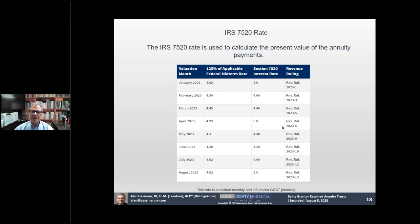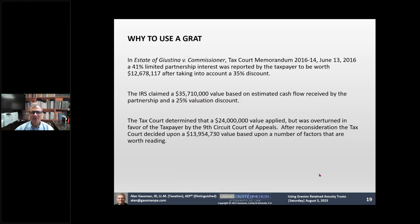This rate is edging up. In January it was 4.6, went up to 5 in April, and now in August it's back up to 5. It's calculated every year based upon approximately 120% of the applicable federal midterm rate, which is basically what they sell five-year treasury bills for. So why would you use a GRAT?